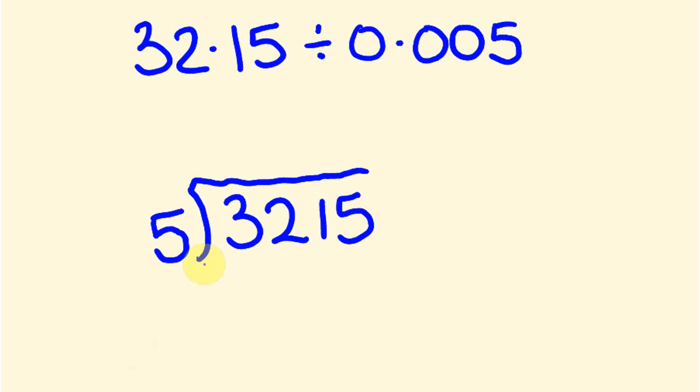Let's do this now. 5 into 3 we can't do so I'm going to put a zero down there. 5 into 32 goes six times with two left over. 5 into 21 goes four times with one left over and 5 into 15 goes three times so we get this answer is 643.